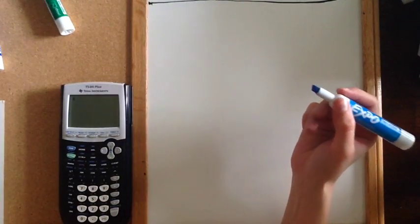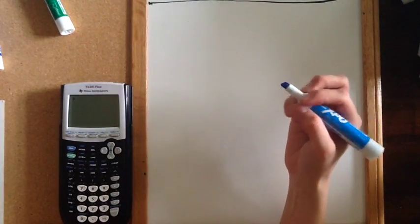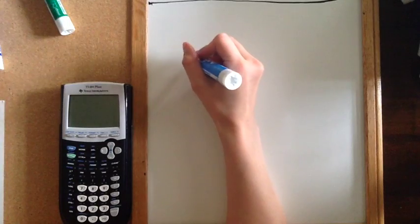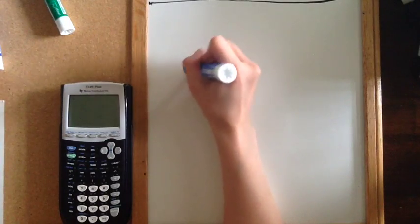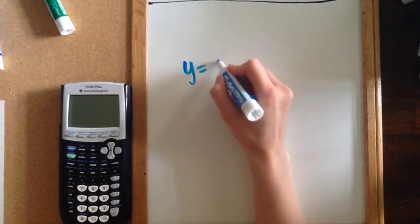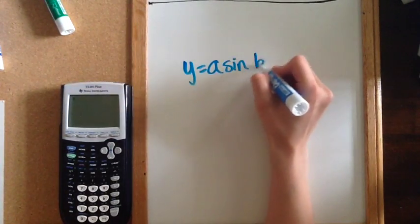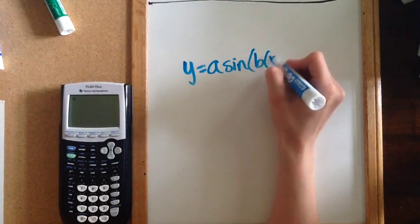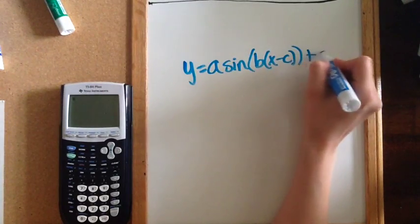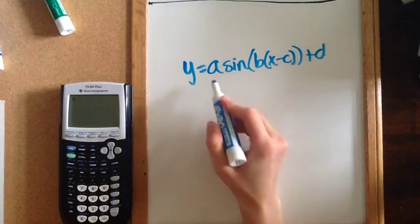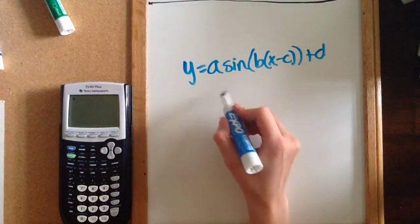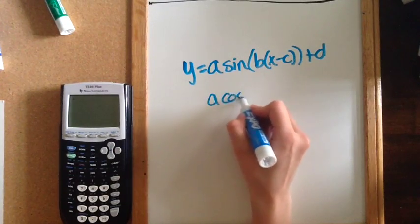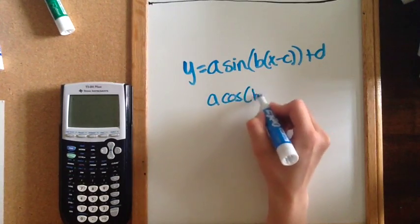I'm going to show you how you can identify different parts of a sine or cosine graph given the equation. So we have y equals a sine of bx minus c plus d, and then similarly for cosine.